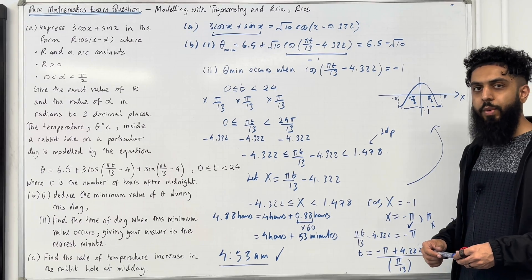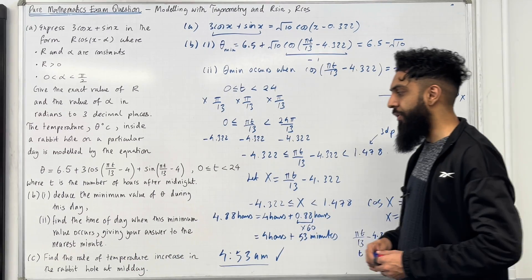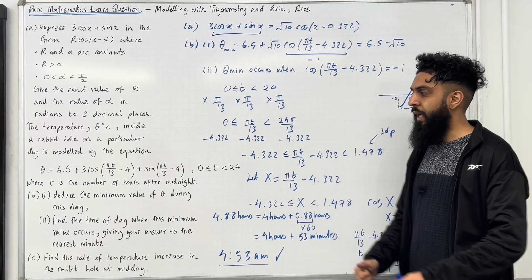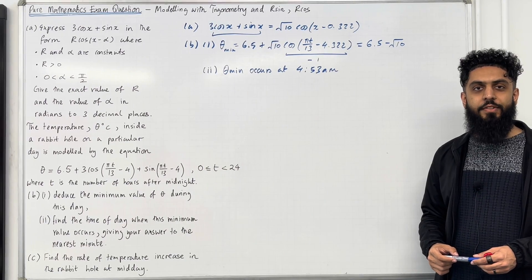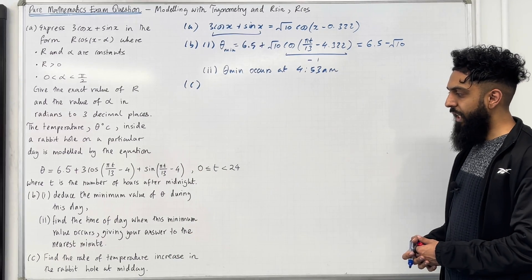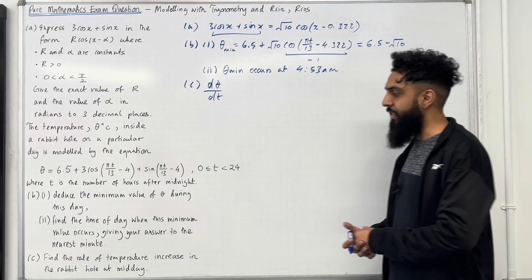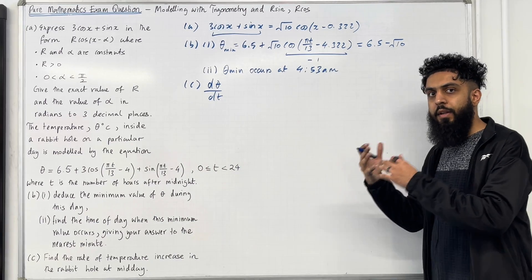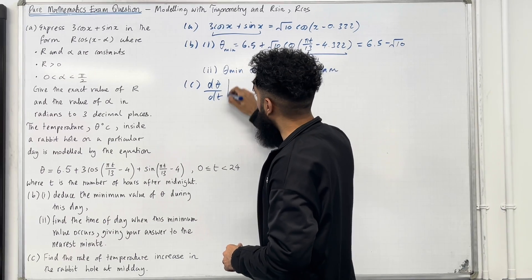The minimum temperature therefore occurs at 4:53am. This completes Part B Part 2. For the final part, Part C: find the rate of temperature increase in the rabbit hole at midday. The key word is 'rate', which indicates a differential. We need to calculate d theta over dt. The model begins at midnight, so midday is 12 hours after midnight, meaning we evaluate d theta over dt at t equals 12.